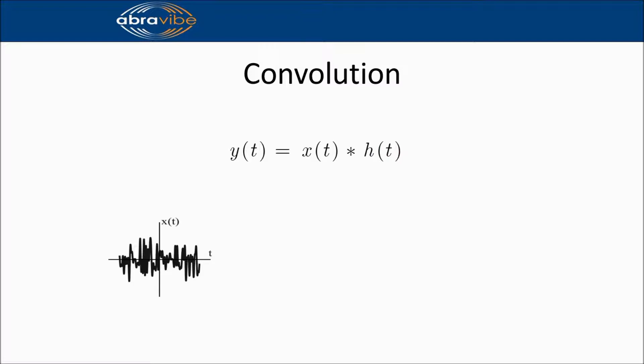The impulse response, h of t, is a function describing the linear system. Such functions are always descending with time, so let us assume our impulse response has some transient behavior as shown in the figure here. We also assume it has limited length to make the illustration a little easier. This does not limit the validity of our explanation.